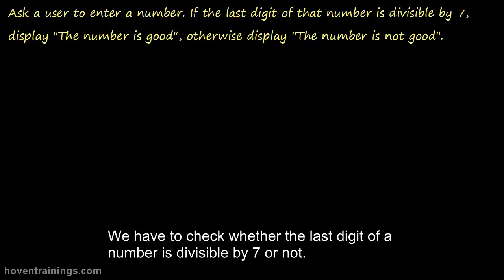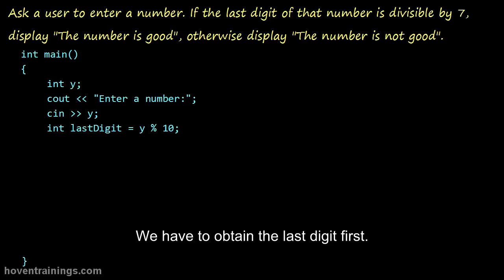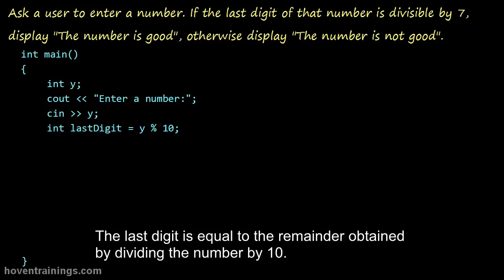We have to check whether the last digit of a number is divisible by 7 or not. We will have to use a decision statement in this program. We have to obtain the last digit first. The last digit is equal to the remainder obtained by dividing the number by 10.